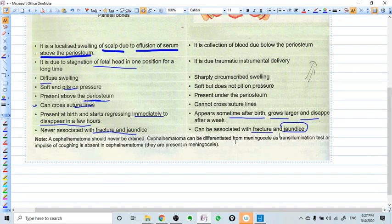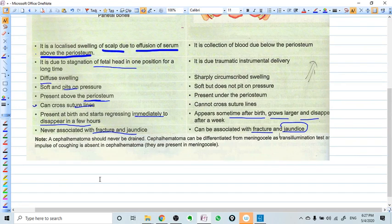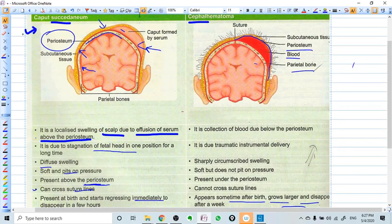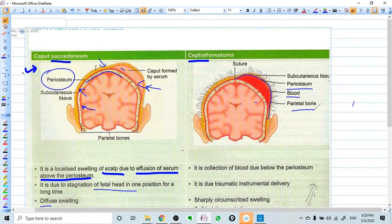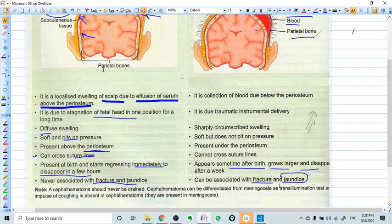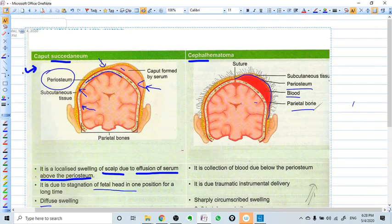A cephalohematoma should never be drained. Cephalohematoma can be differentiated from the meningocele as a transillumination test, and there is no cough reflex in this cephalohematoma and also in this caput succedaneum. While if we talk about meningocele there is a cough reflex.